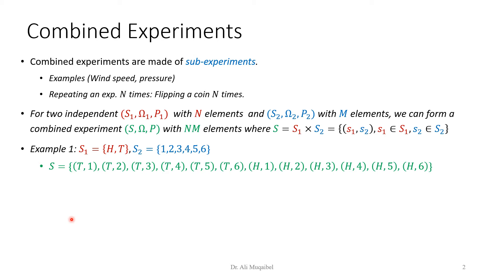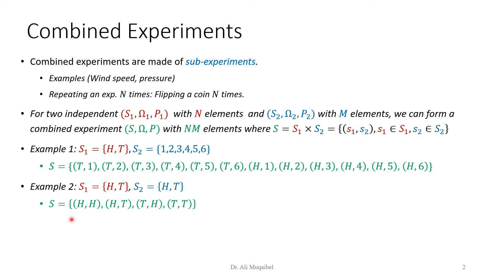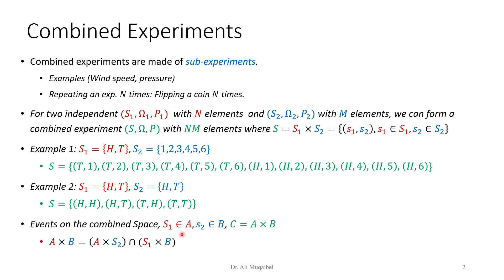In example two, we combine two coins. The possible outcomes are two times two = four possibilities: head-head, head-tail, tail-head, and tail-tail.